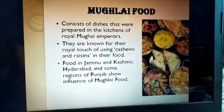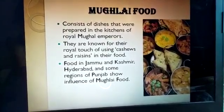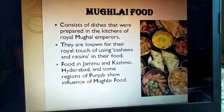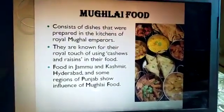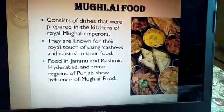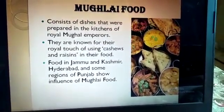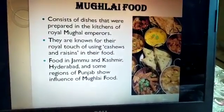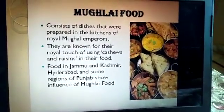Mughal food consists of dishes prepared in the kitchens of the royal Mughal emperors. Every dish has the touch of cashews and dry fruits. Food in Jammu and Kashmir, Hyderabad, and many regions of Punjab shows the influence of Mughal food.